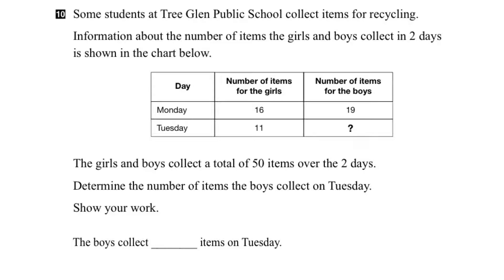We know that all of these values added together would equal the total of 50 items collected. So let's work out the number of items collected by the girls. If we take 16 plus 11 we'd get 27 items collected by the girls on Monday and Tuesday. And if we looked at the items for the boys we'd see that they collected 19 plus the question mark. We know that if we add all of these together — the 27 items collected by the girls plus the 19 plus the question mark — they would equal 50.